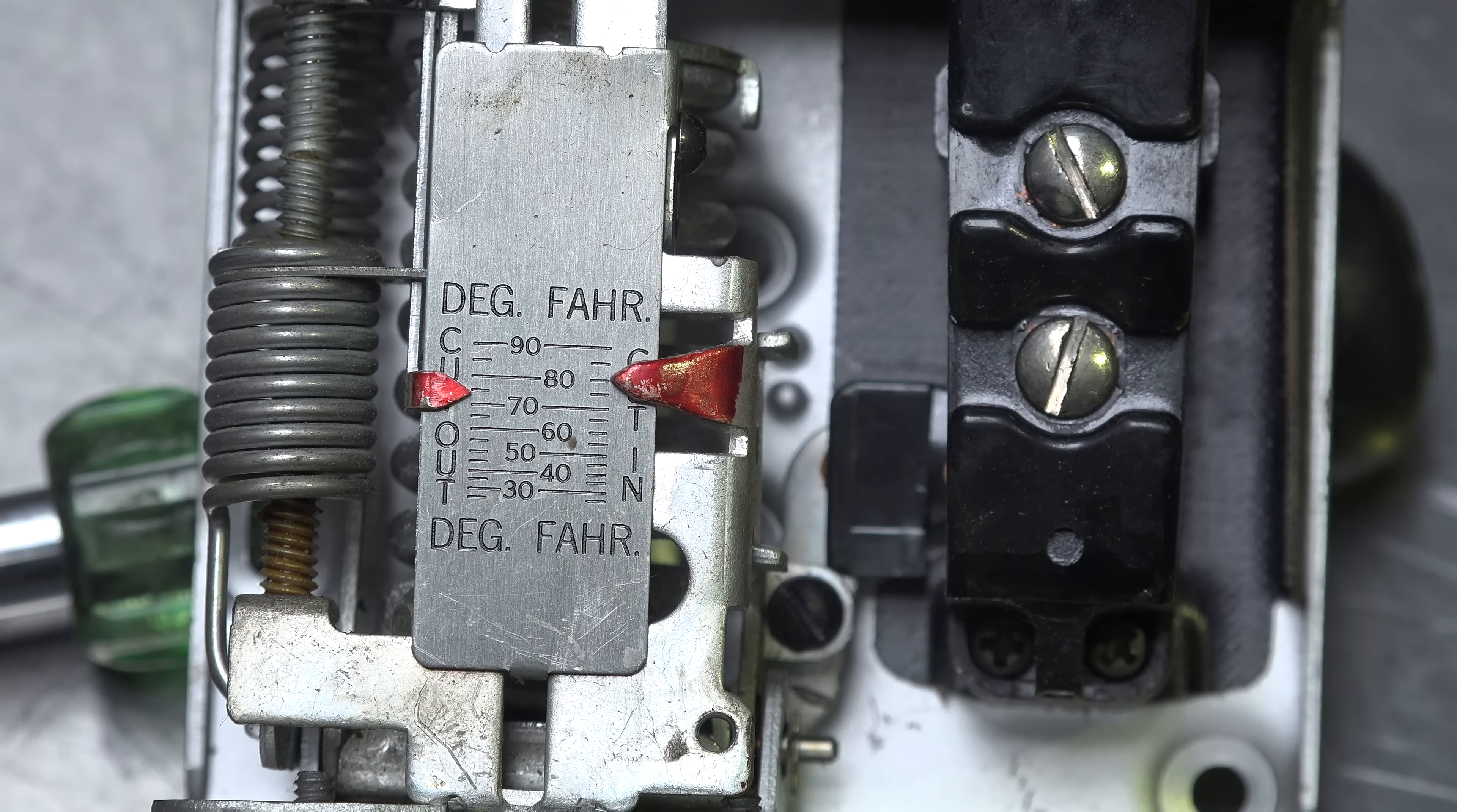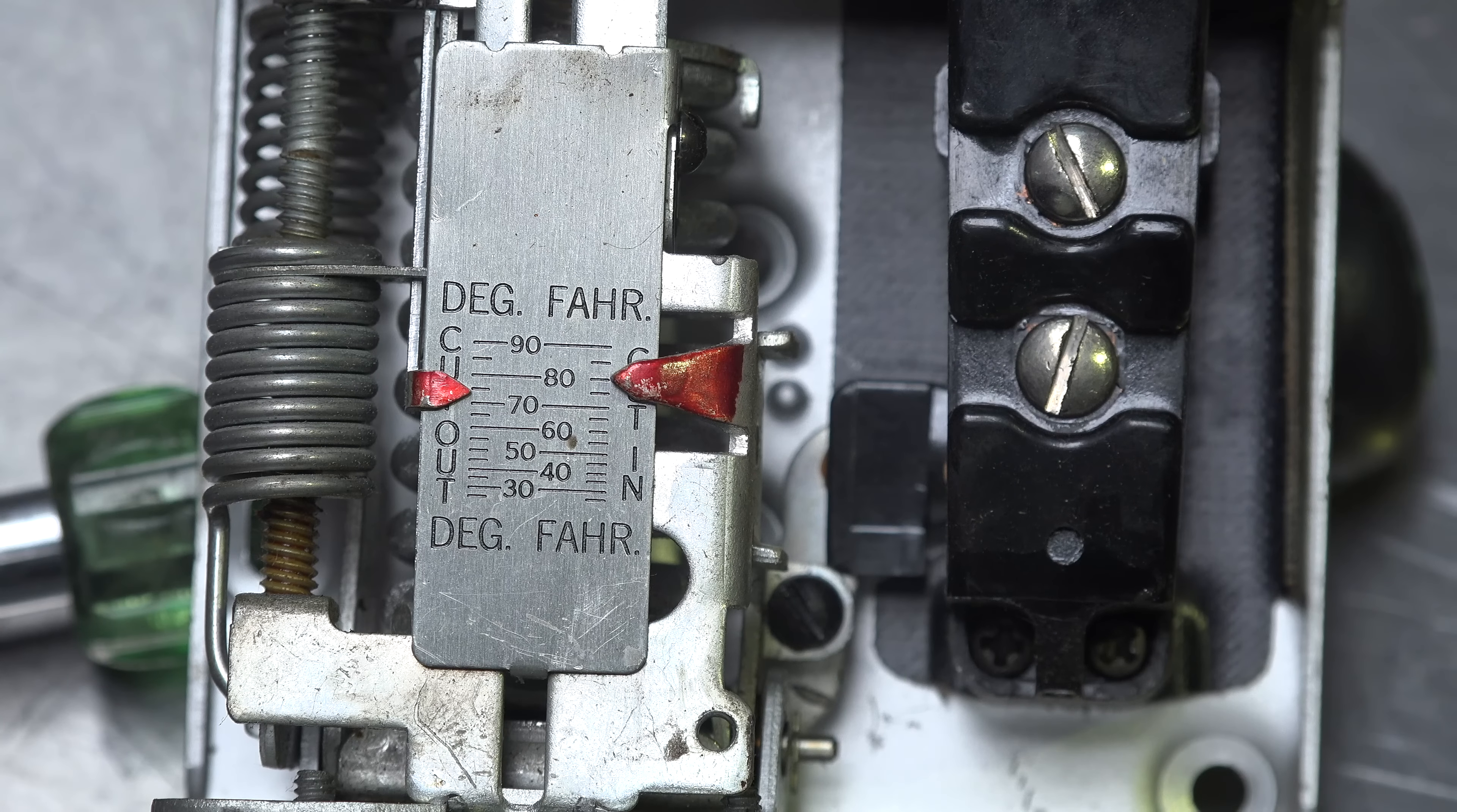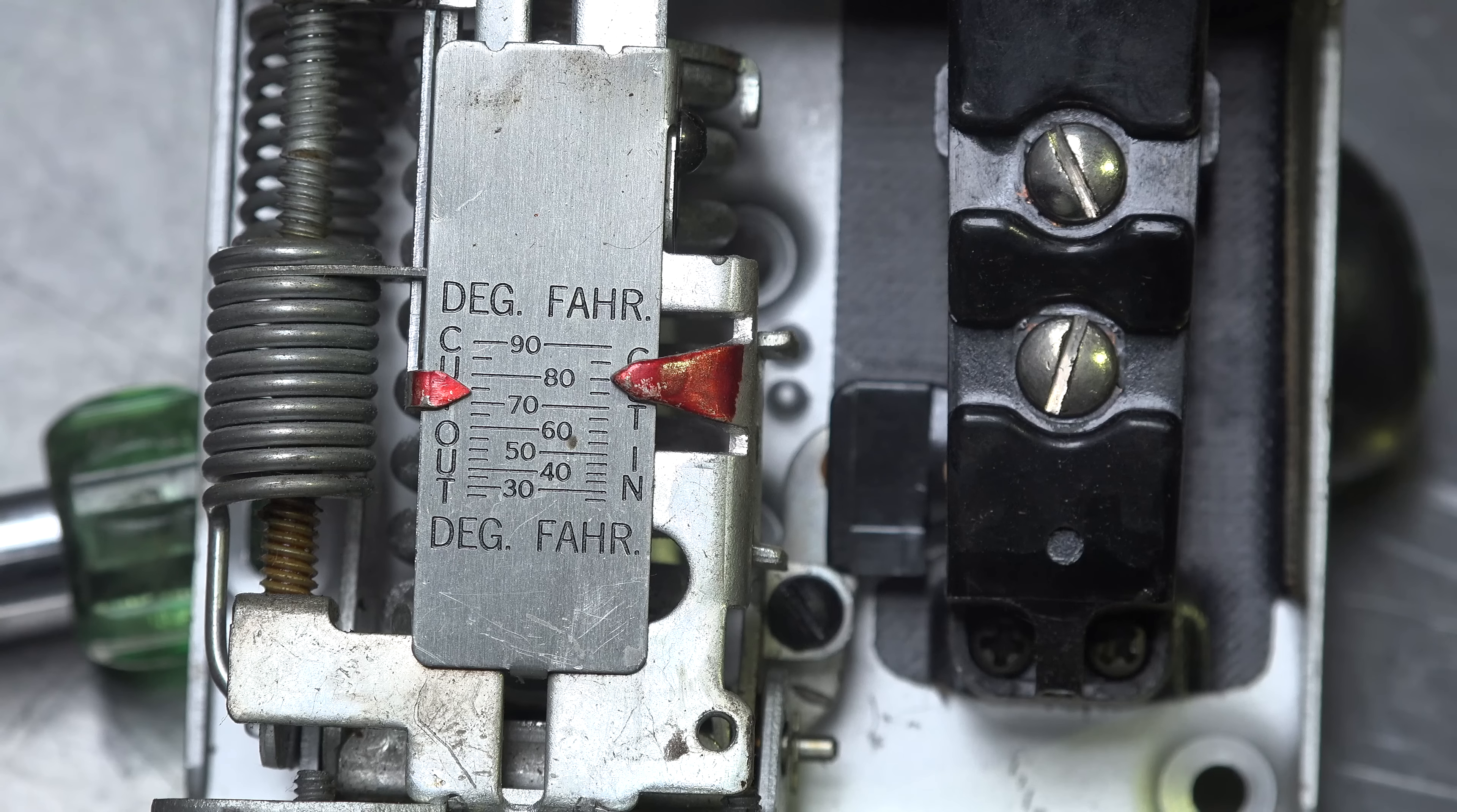When you have something like this that has a cutout and a cut in, that means right there it says cut in when it hits 80 degrees Fahrenheit. If it hits 80 degrees it turns on, so it's a cooling thermostat. Temperature goes up it comes on, goes down it comes off.